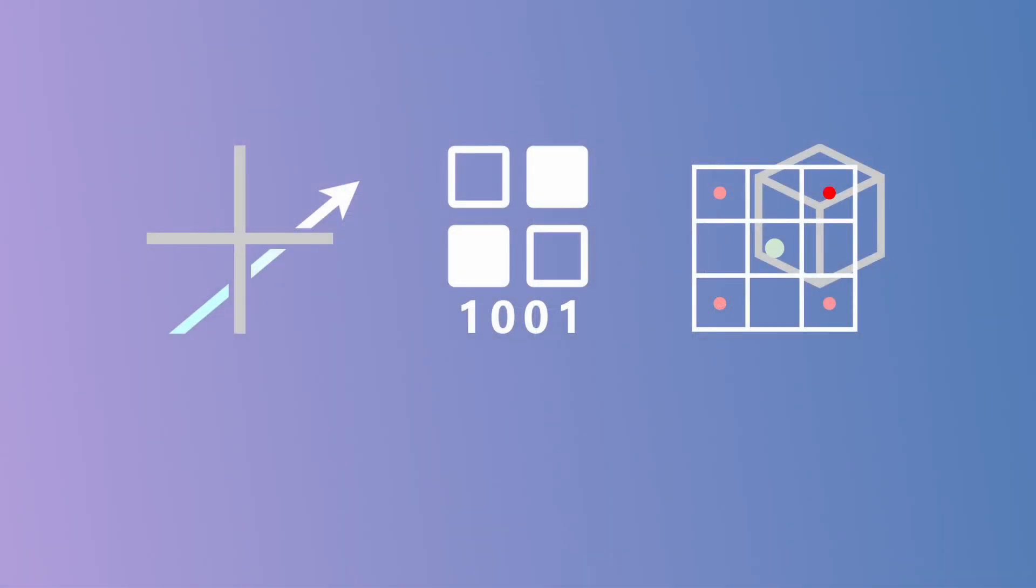But how do the rays actually move from one empty voxel to the next? That question brings us to the first optimization, which is to use DDA instead of ray box intersection tests.